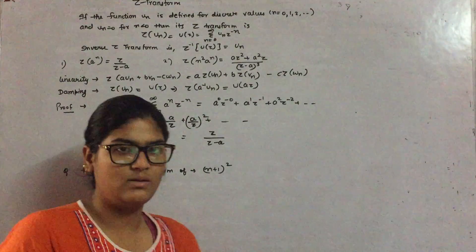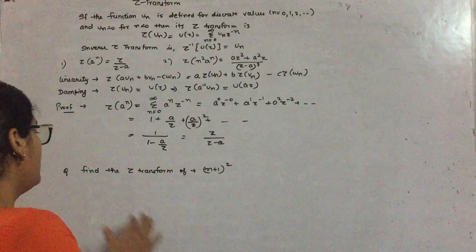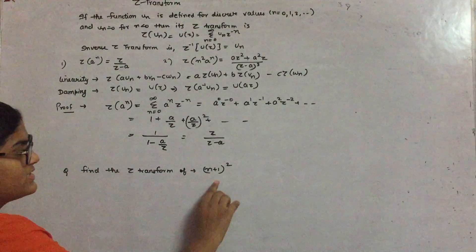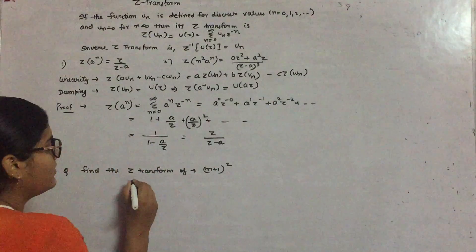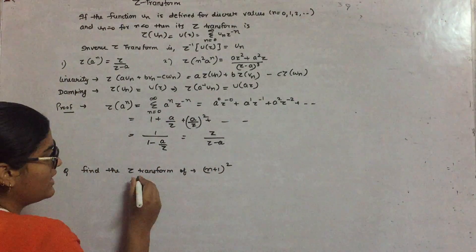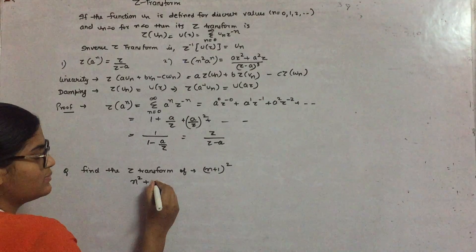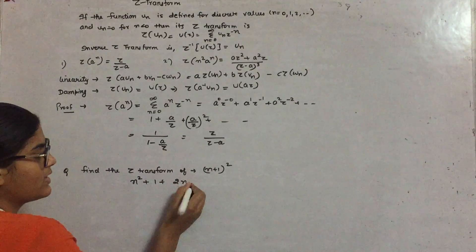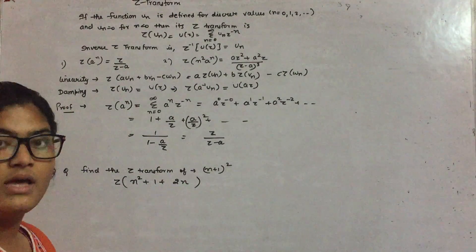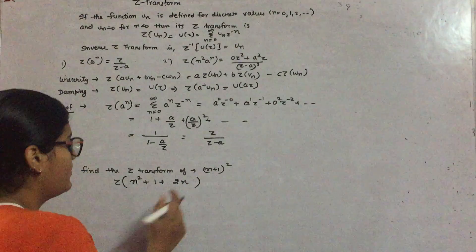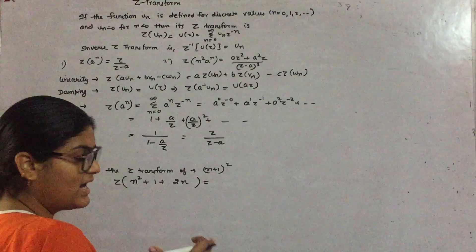Now we are going to discuss some illustrations. Here you have to find the Z transform of (n+1) whole square. Firstly apply the formula for (a+b)^2. It will become n^2 plus 1 plus 2n. Then Z transform of the whole term: apply linearity property.